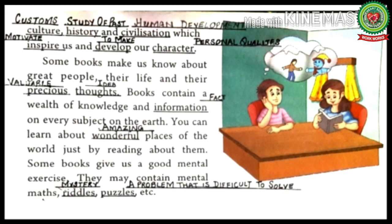Come to the next paragraph. Some books make us know about great people, their life and their precious thoughts. Underline 'precious' — write down: valuable. Underline 'thoughts' — write down: idea. Some books are based on the lifestyle of people who inspire us; by reading such books, we come to know about their valuable thoughts. Books contain a wealth of knowledge and information on every subject on the earth — books are the storehouse of knowledge. We can get information about any field through books.